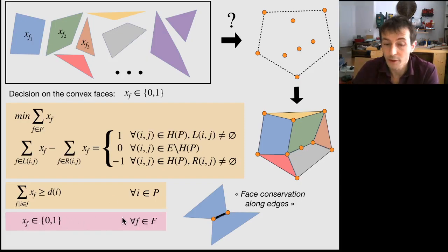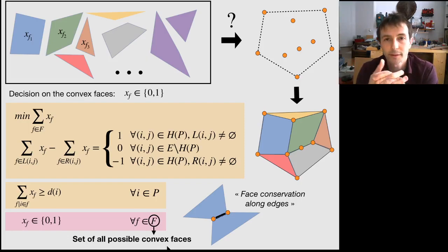Okay. And recall, we have one variable for each possible face. And so that's a bit tricky because big F here is a set of all possible convex faces.